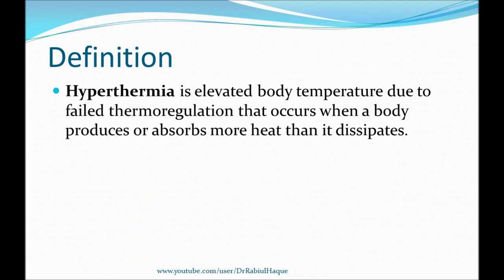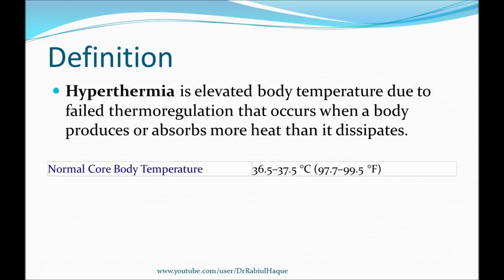In the first line of the definition, hyperthermia means elevated body temperature due to failed thermoregulation. Now what do we mean by elevated body temperature? Always remember: normal core body temperature, or the rectal temperature in human beings, is from 36.5 to 37.5 degrees Celsius, or 97.7 to 99.5 degrees Fahrenheit. Hyperthermia will happen when the body temperature is elevated beyond this normal level.